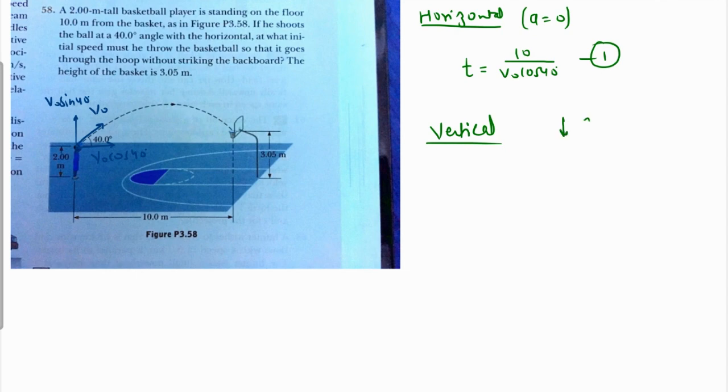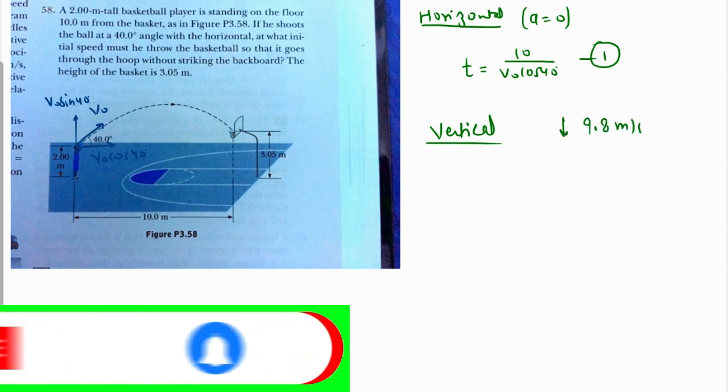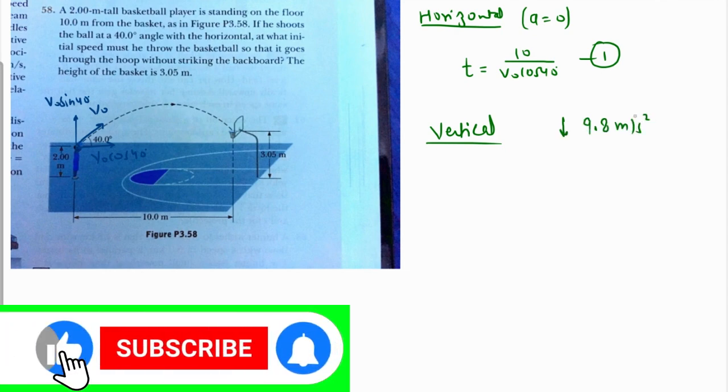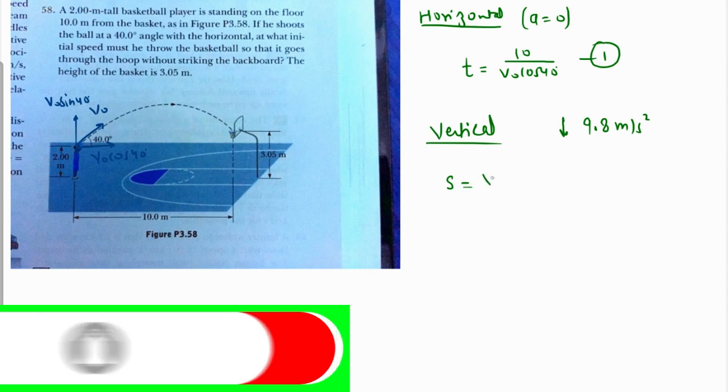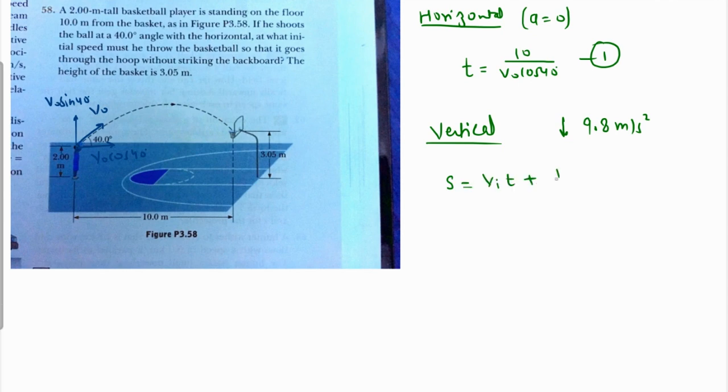Now let's analyze the vertical motion. Since there is an acceleration due to gravity which is 9.8 meters per second square acting down, we're going to use the second equation of motion: the displacement s is equal to v initial times t plus half a t squared.